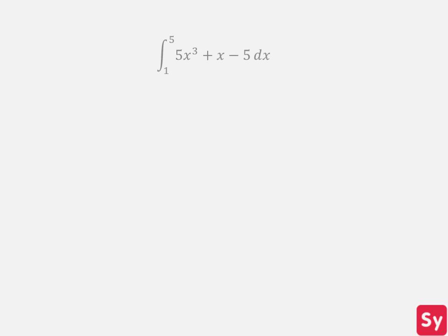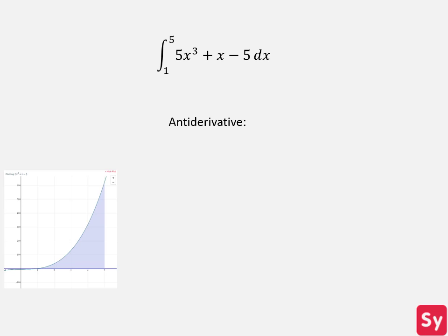Here is our first example. We have the integral from 1 to 5 of 5x cubed plus x minus 5. We can see the graph corresponding to our integral. The shaded region is the area we wish to find. First, we compute the indefinite integral. If you are having trouble with this, take a look at our videos on solving indefinite integrals. Next, we refer to the equation for solving definite integrals.